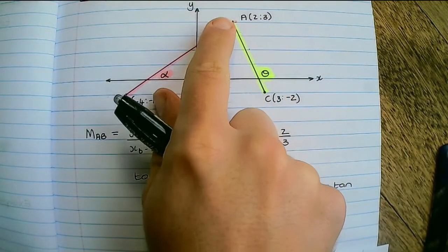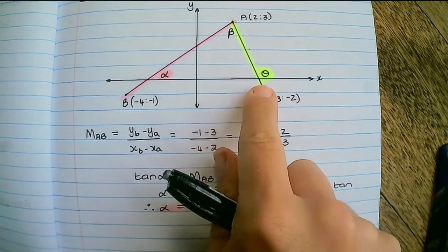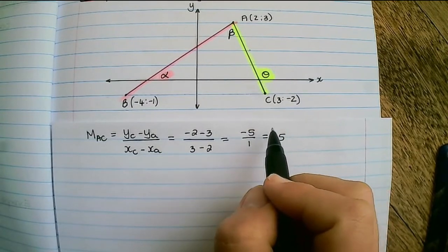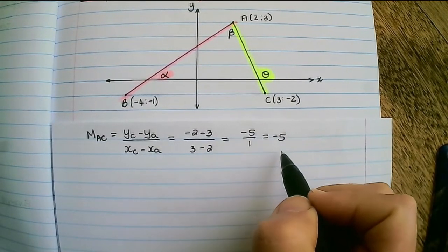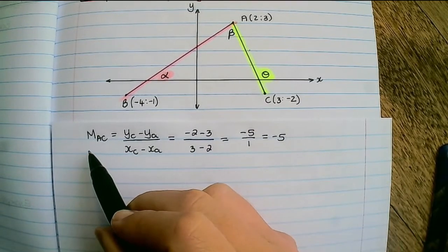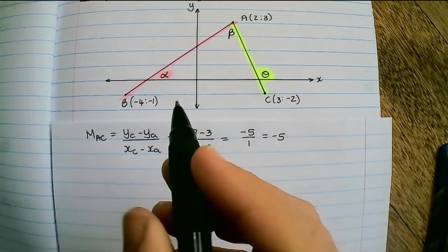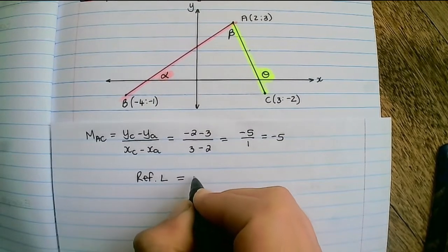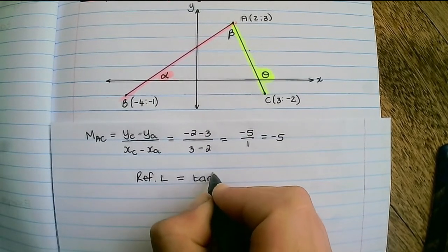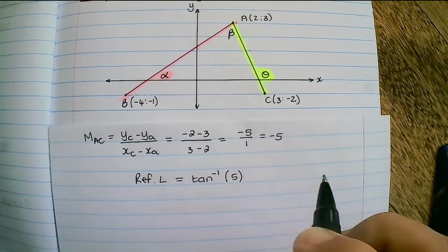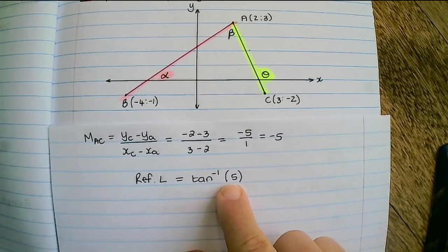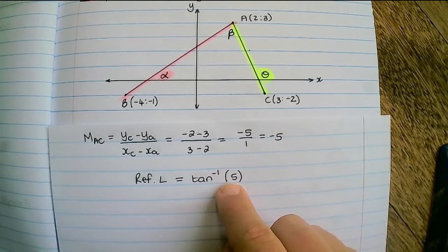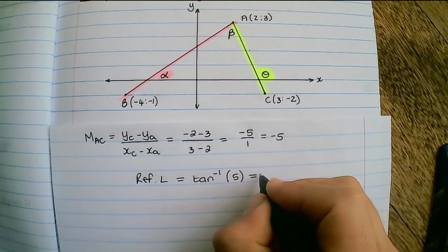So we can use the gradient of line AC to find the size of theta. So the gradient of line AC is negative 5. Now when we have a negative value, we simply don't want to substitute it to solve theta. We would rather find a reference angle. So what we simply do is we drop the negative in front of the gradient and we use a positive value in order for us to find a reference angle.